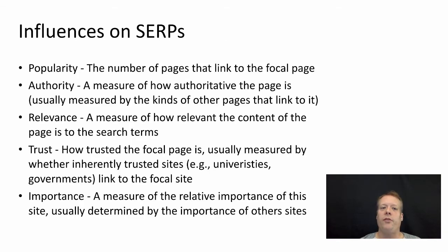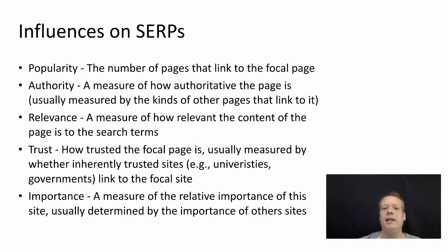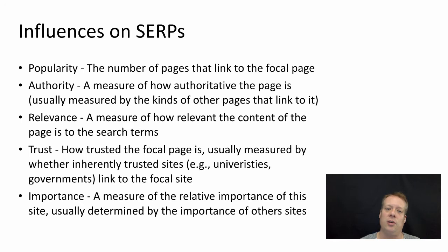So what influences a search engine result page, and especially what influences your rank on that? Well, there are kind of five different factors you can think about. One is popularity — the number of pages that link to your page influence its overall results. The more pages that consider your page to be a good page, the more likely you are to be towards the top.